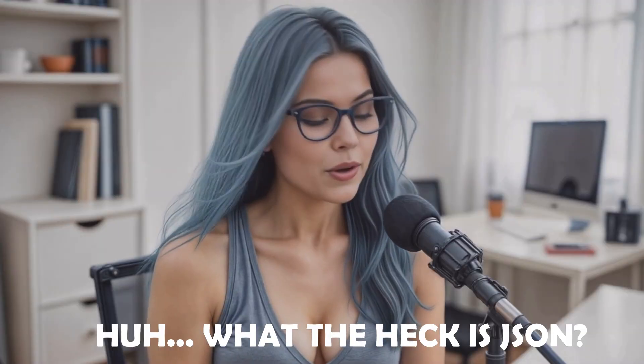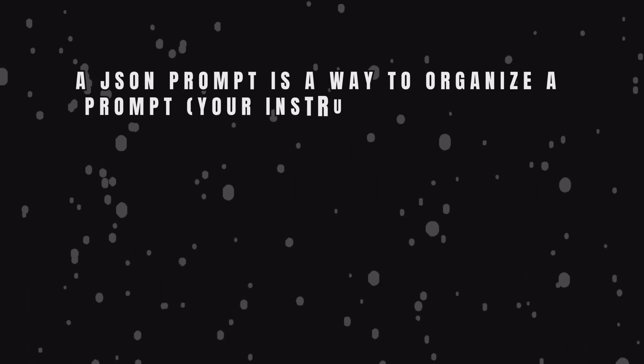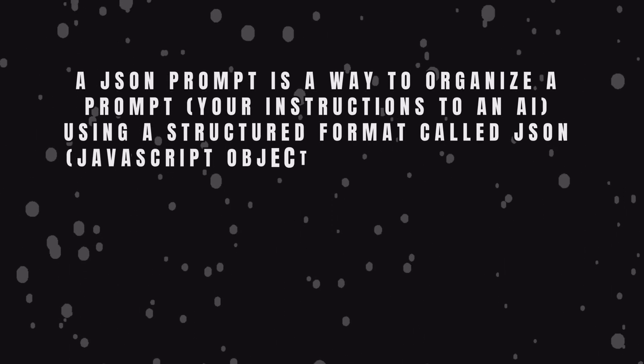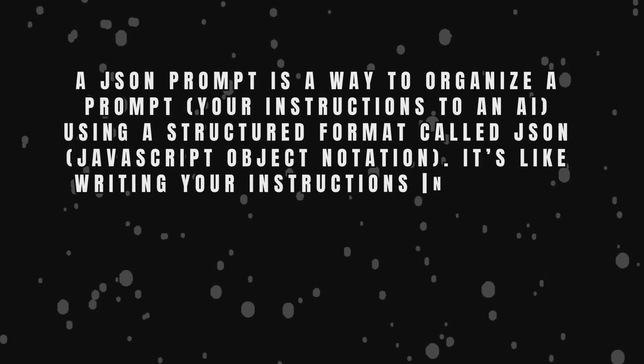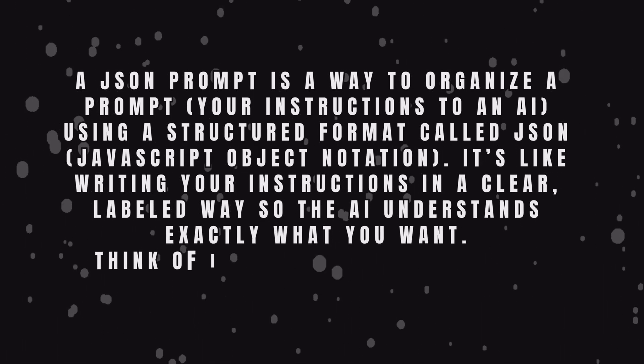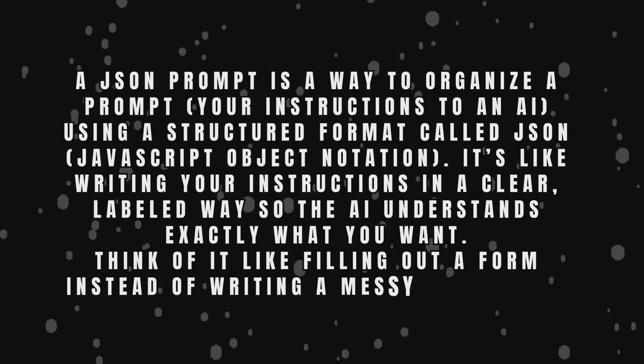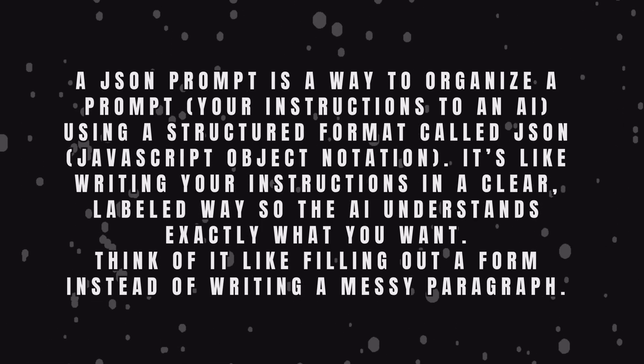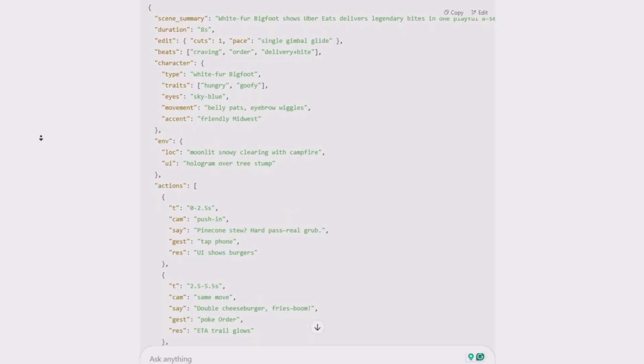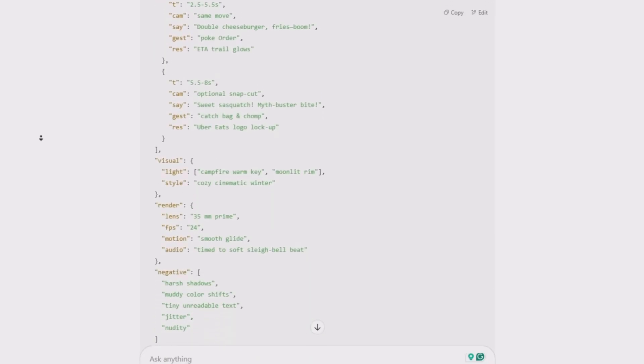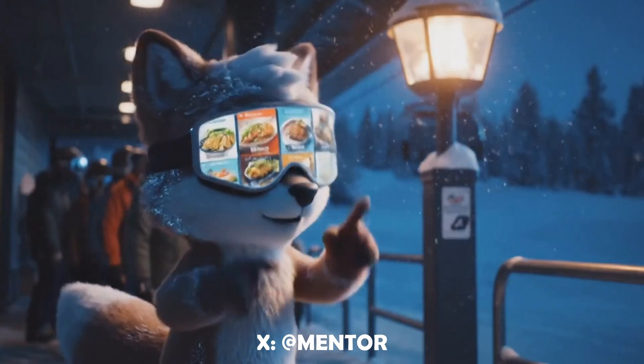What the heck is JSON? Great question. JSON, short for JavaScript Object Notation, is like a recipe card for AI — clean, organized, and packed with ingredients that tell the system exactly what you want. Instead of tossing in a vague prompt and praying to the algorithm gods, JSON lets you structure every detail: scene layout, character traits, camera movement, call to action. In tools like VEO3, this level of control means you're crafting a high-conversion, scroll-stopping cinematic ad.